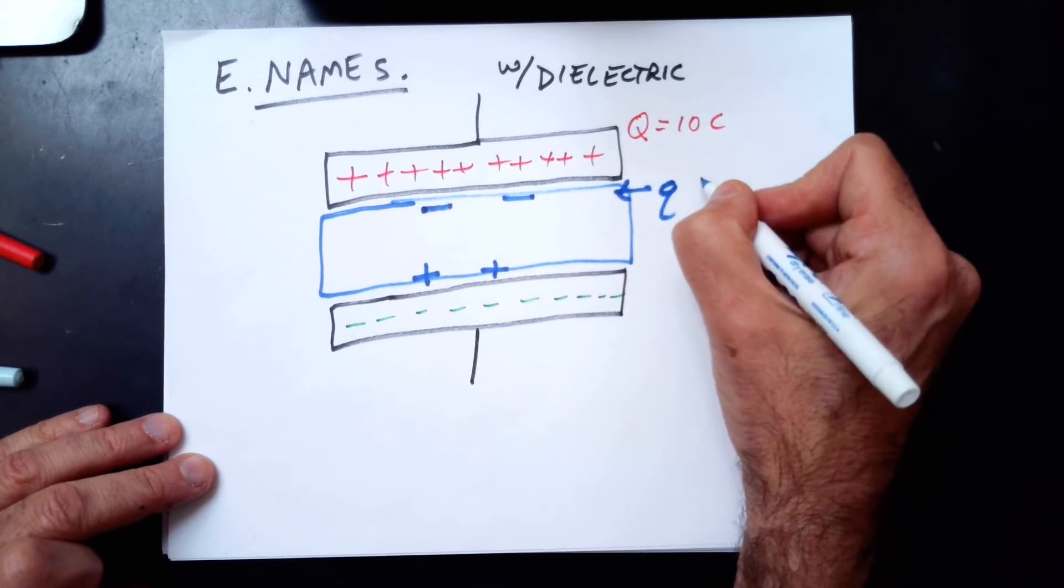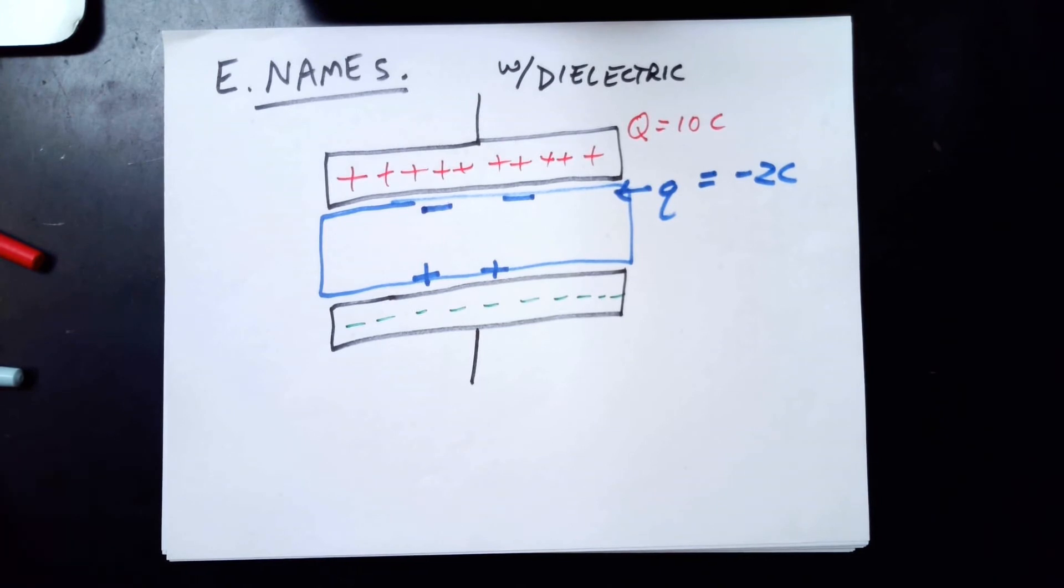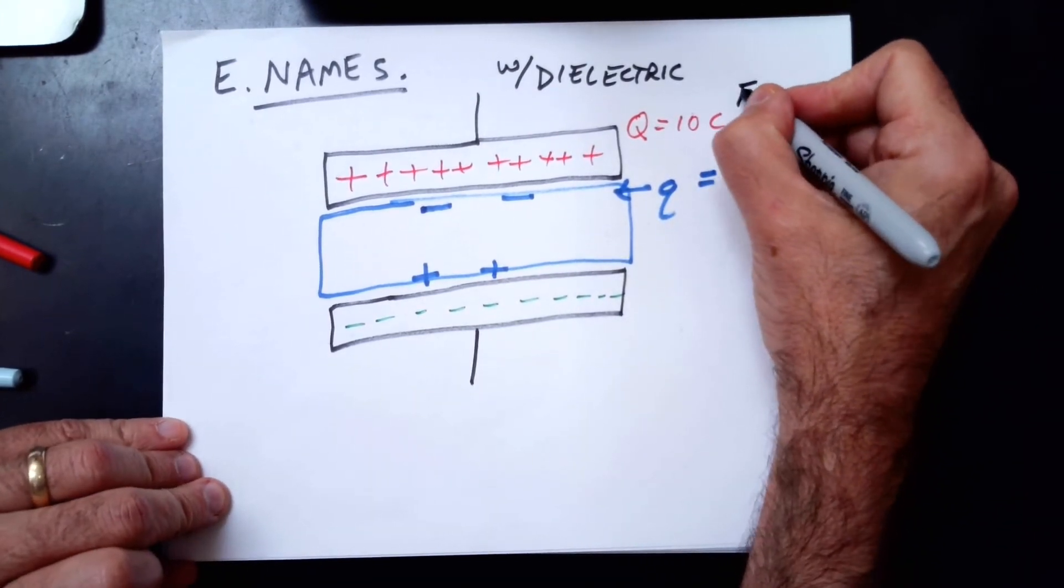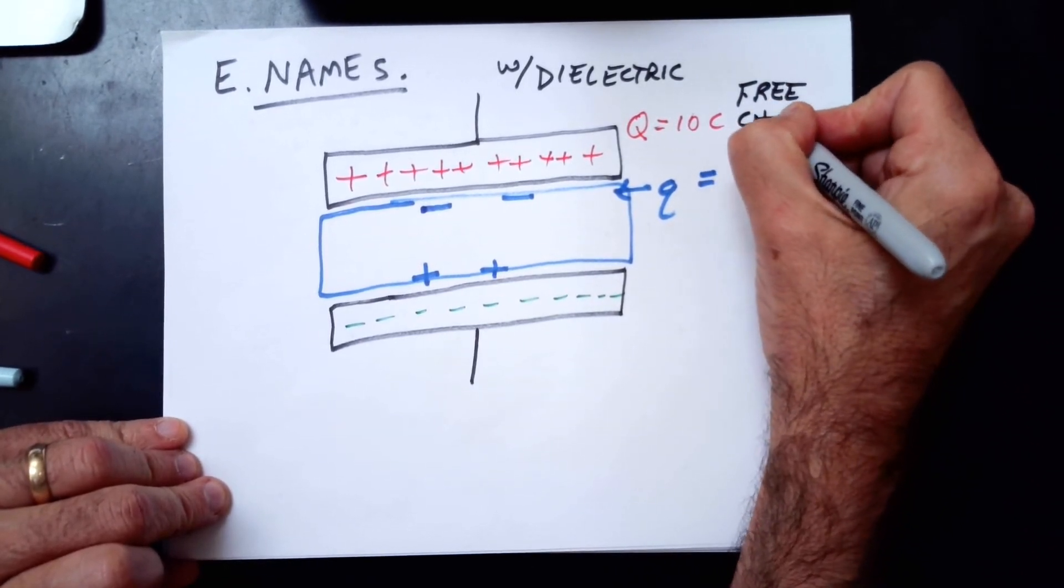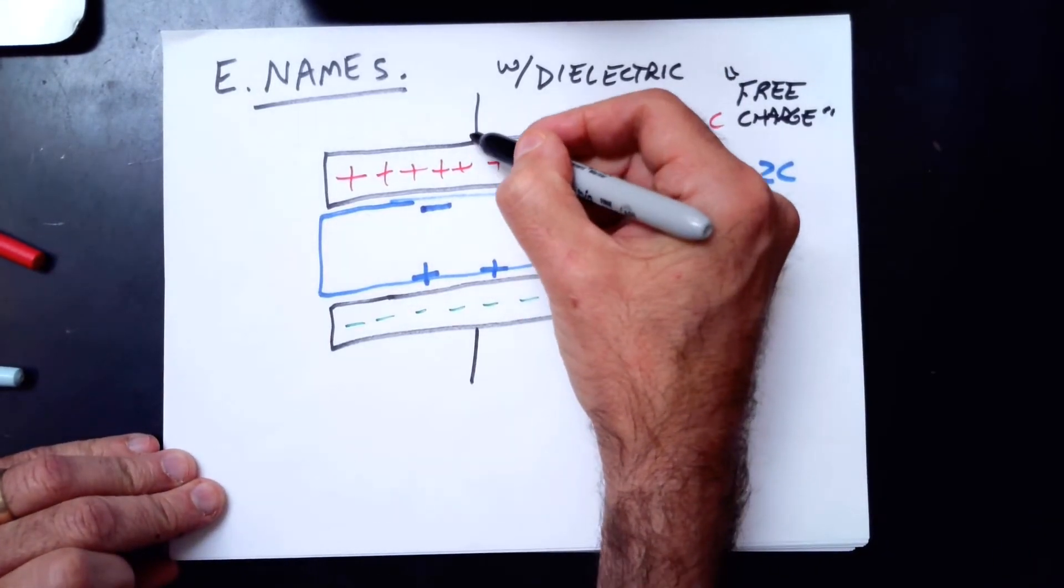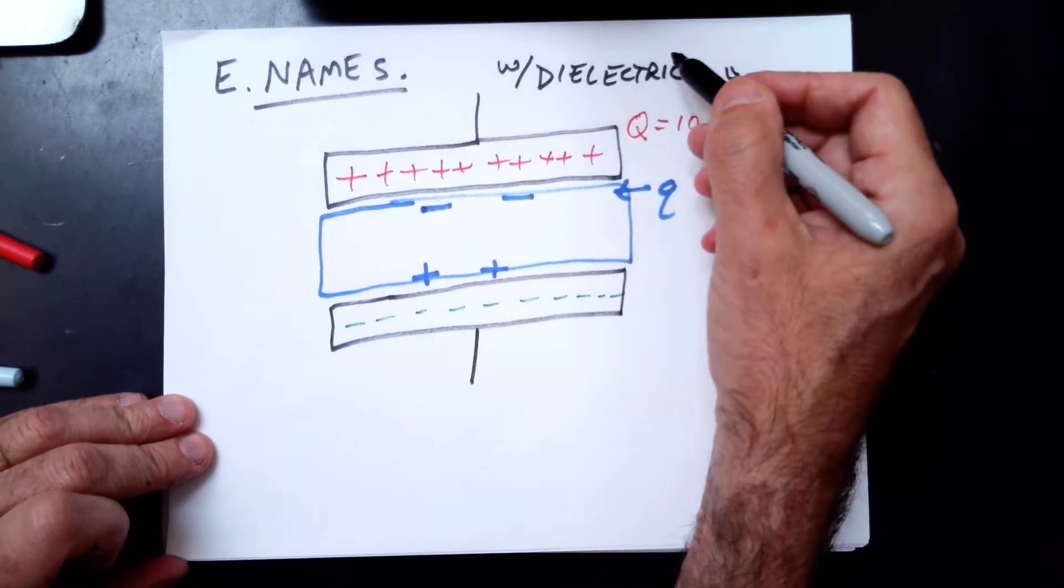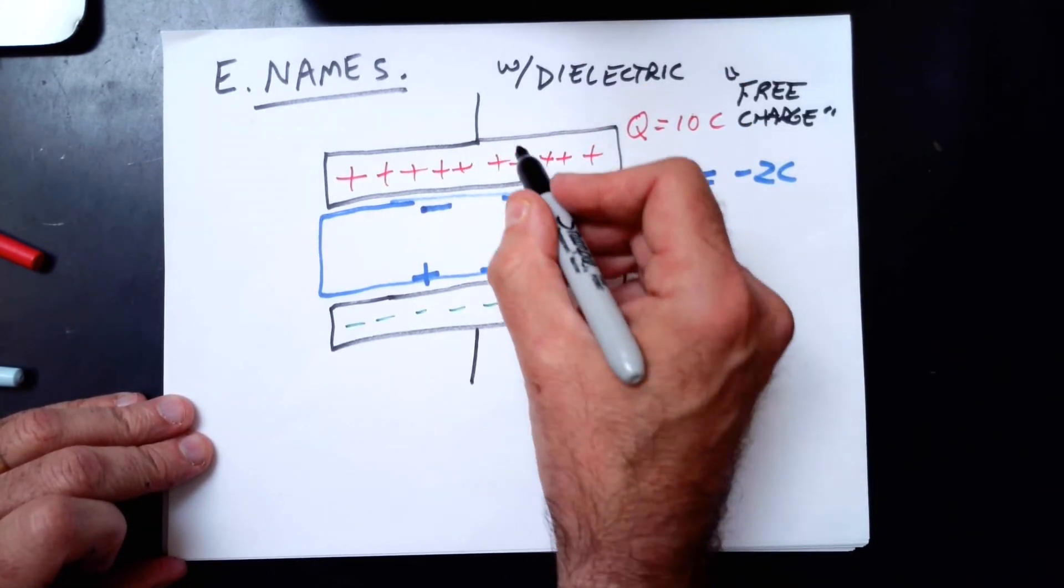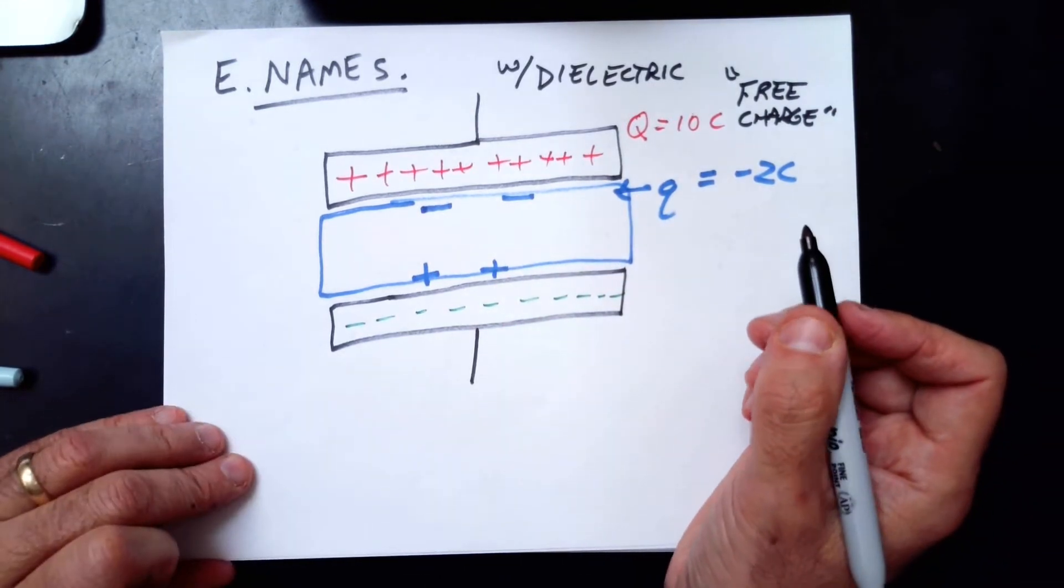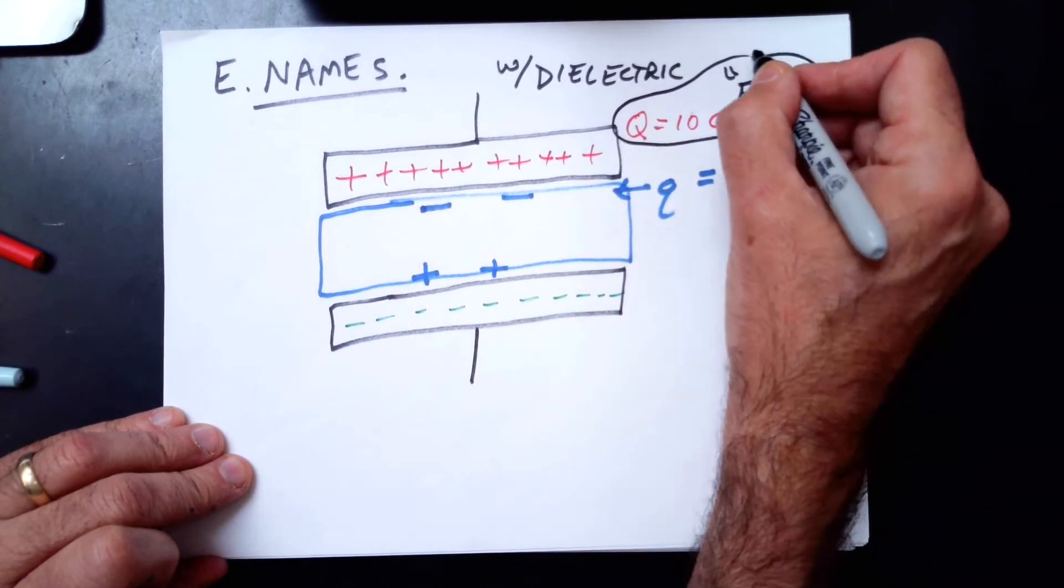This Q, we'll use a lowercase Q, equals negative 2 coulombs. This charge up here is called the free charge. That's called free charge because it's free to leave the plate if you were to disconnect the capacitor from the battery and put it on a light bulb. This would be free to leave the plate. This is also called free charge. The free charge is the charge on the plate. I wish I could call it plate charge, but it's called free charge. So the free charge is the 10 coulombs on the plate.